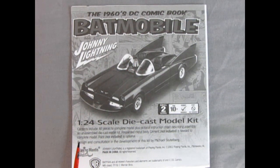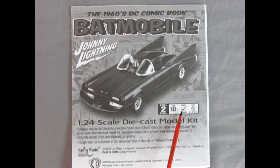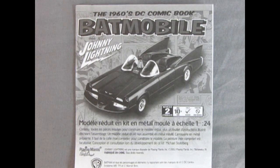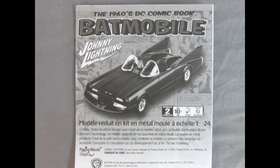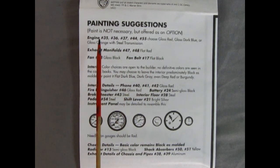Now here we have the instructions for our model kit, and this is a skill level 2 kit for ages 10 and up. It needs some paint and not really any glue, but you can also use those as well. Our instructions also include a French version on the back, so that if you're in French-speaking Canada, you can also build the model kit. Now right off the bat, no pun intended, we have the painting suggestions. Paint is not necessary, but offered as an option.